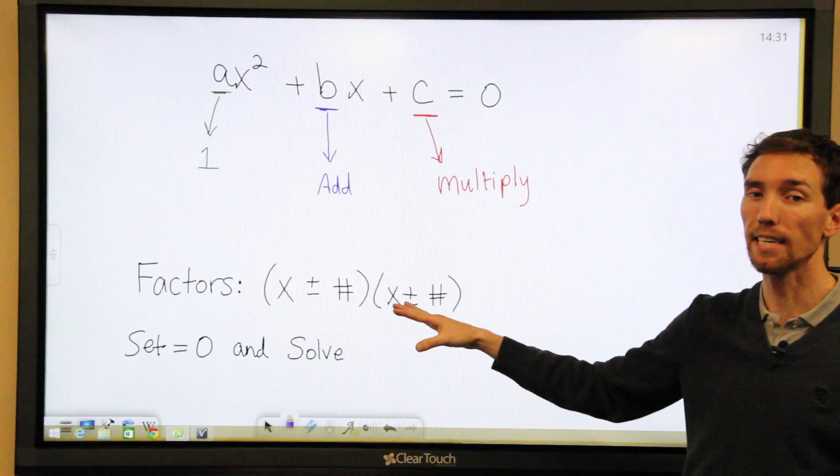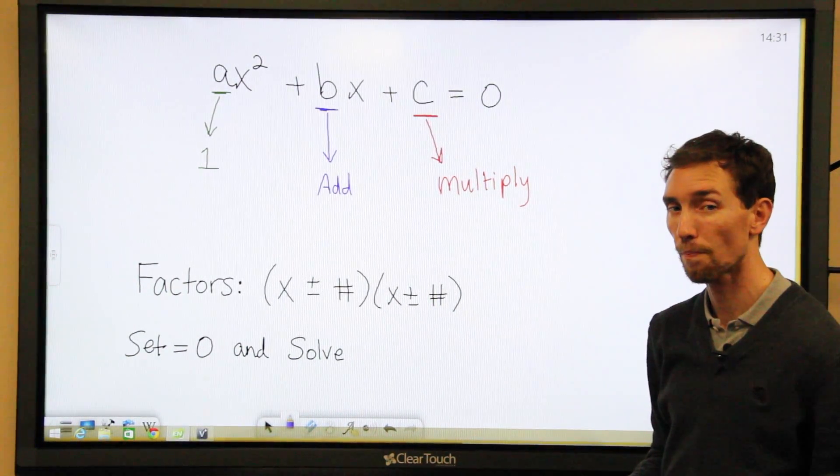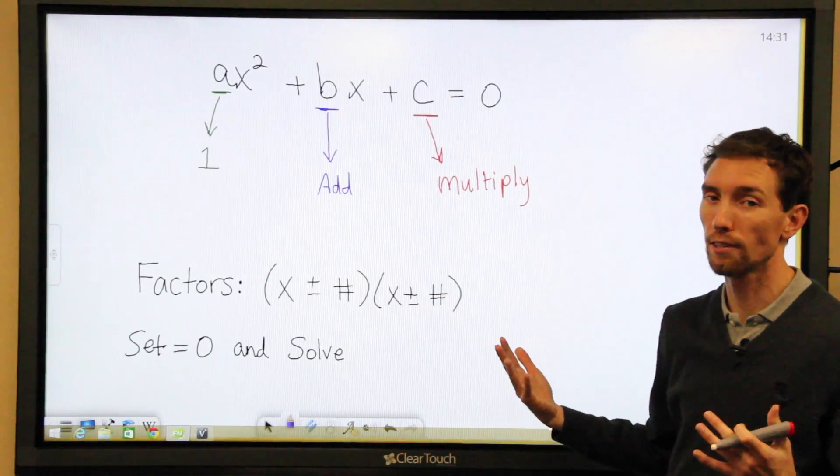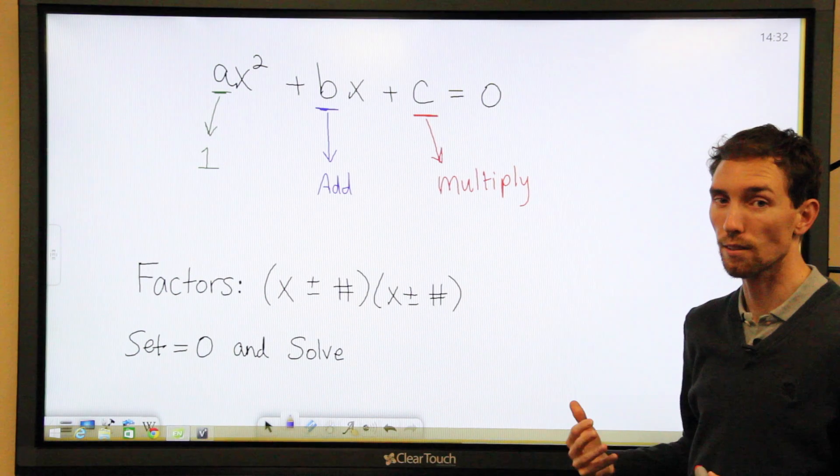Once you have those, you're going to set each of those equal to zero, and you're going to solve, and those are going to be your solutions. I know it might sound a little confusing at first, but once we get through a couple of examples, it'll make more sense. So let's get started.